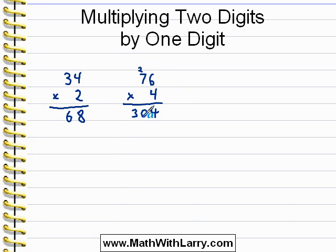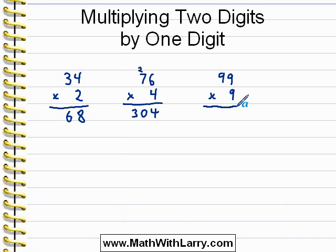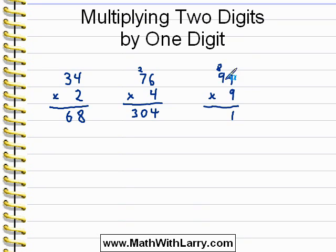Let's take a look at another example: 99 times 9. Again, starting on the right, we have 9 times 9, which is 81. I have to write the 1 in my ones place, and I'm going to carry the 8 over to here. All this means is we have to remember to add in 8 tens after the next computation. 9 times 9 is 81. Adding in the 8 tens that we carried gives us 89. So we have 89 tens, which gets written like this. And remember that 89 tens equals 890.